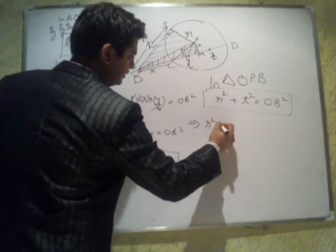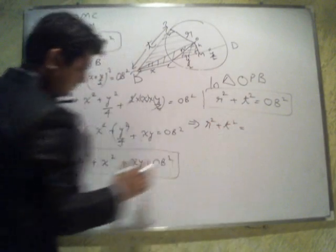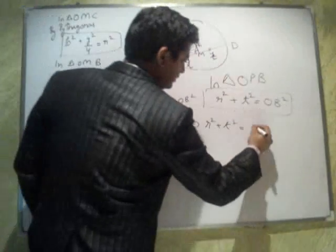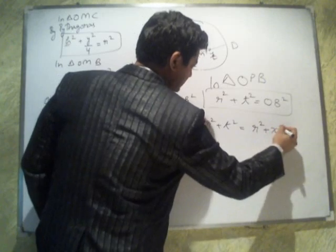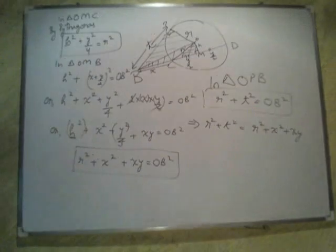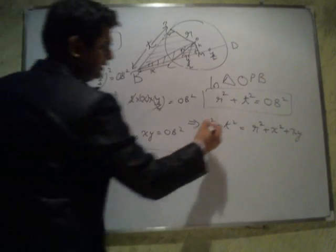Therefore, R square plus T square is equal to R square plus X square plus XY.